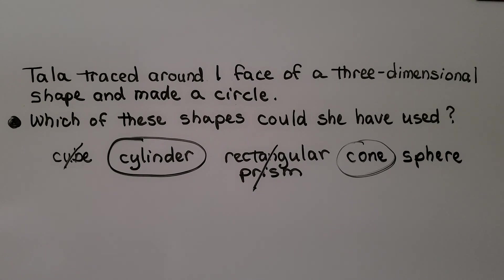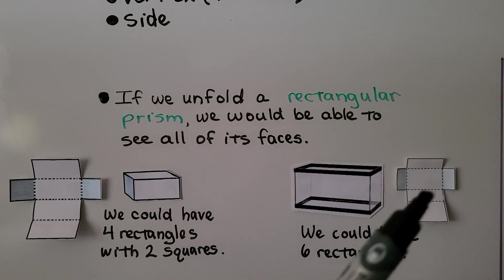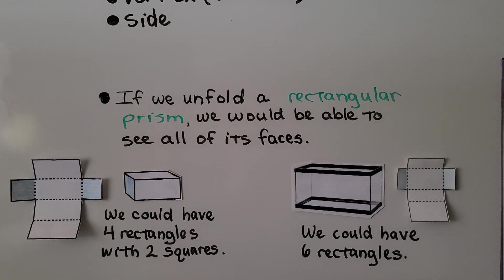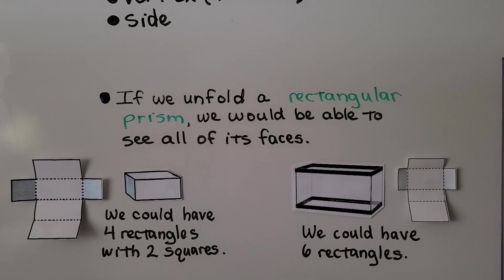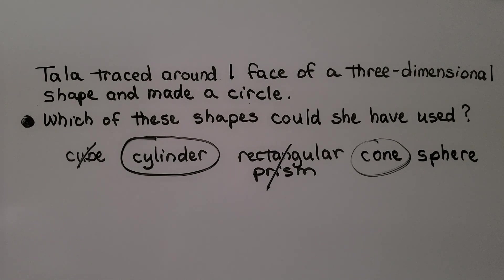So a cube would have squares and a rectangular prism would have six rectangles or it could have four rectangles with two squares. A rectangular prism doesn't have circles for a face. So for her to trace a circle, her three-dimensional shape had to have been a cylinder or a cone.